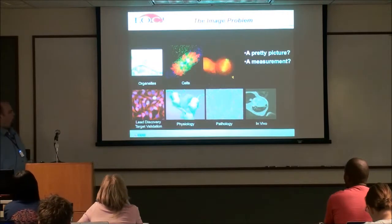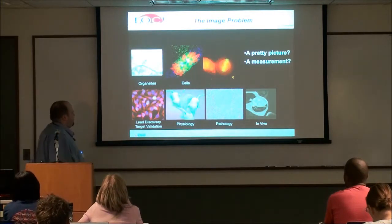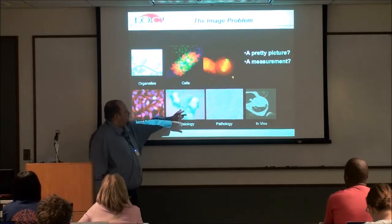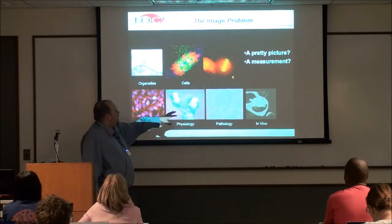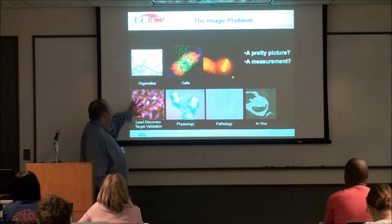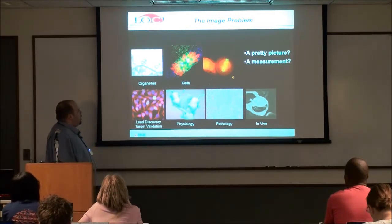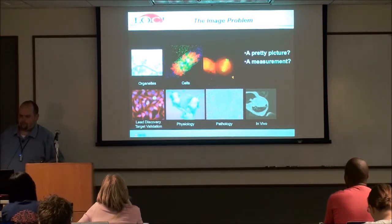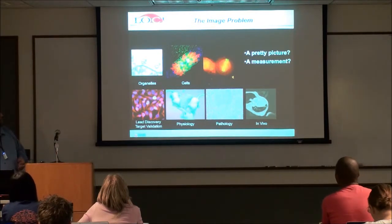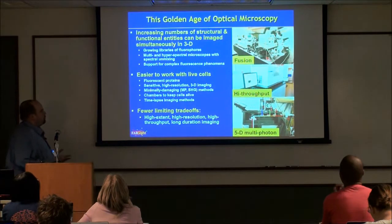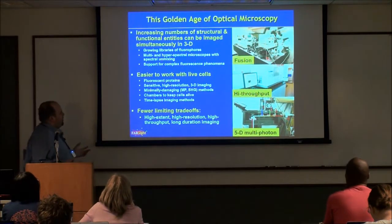If you look at all the types of fluorescence-based data — luminescence, fluorescence in live animals, pathology data sets, data through an endoscope, drug validation, organelle and cell work — all these things are pretty pictures, but they're also measurements. We're really in what I'd call the golden age of optical microscopy. We have a growing library of fluorophores, microscopes that can deal with spectral information — hyperspectral — and correlate space and spectra.